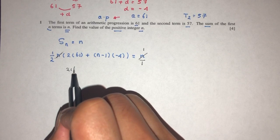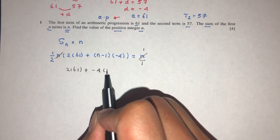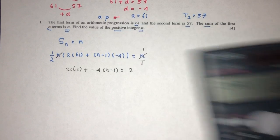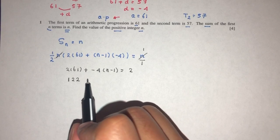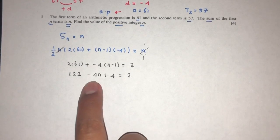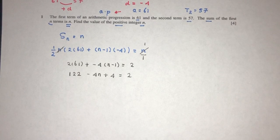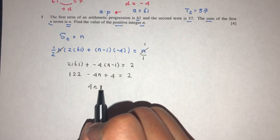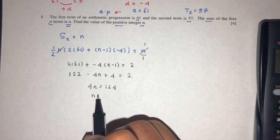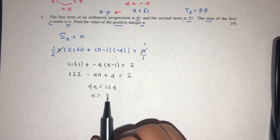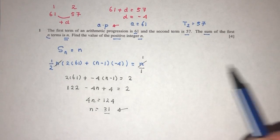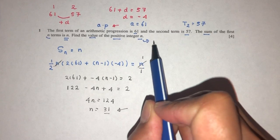Simplifying: 2 times 61 is 122. Here we have minus 4N plus 4 equals 2. Rearranging, send N over here and all the numbers on one side: 4N equals 122 plus 4 minus 2, that should be 124. So N will be 124 divided by 4, that should be 31. And that is your value of N. Obviously, N is a positive value, so N will be 31.